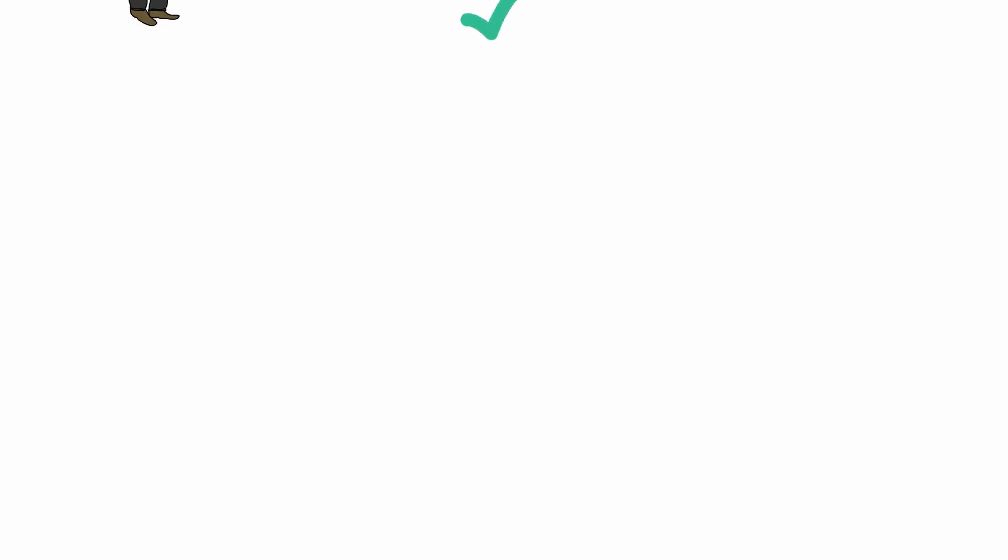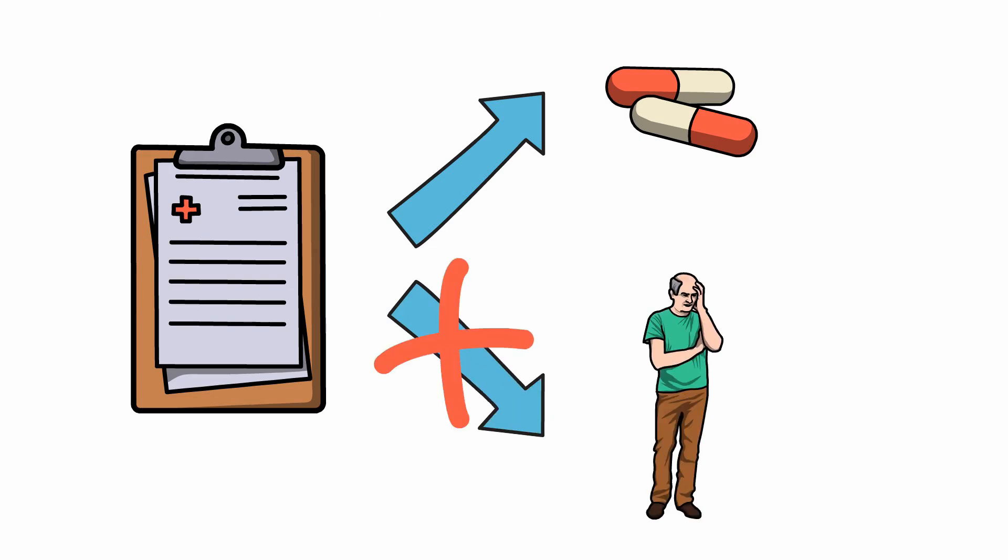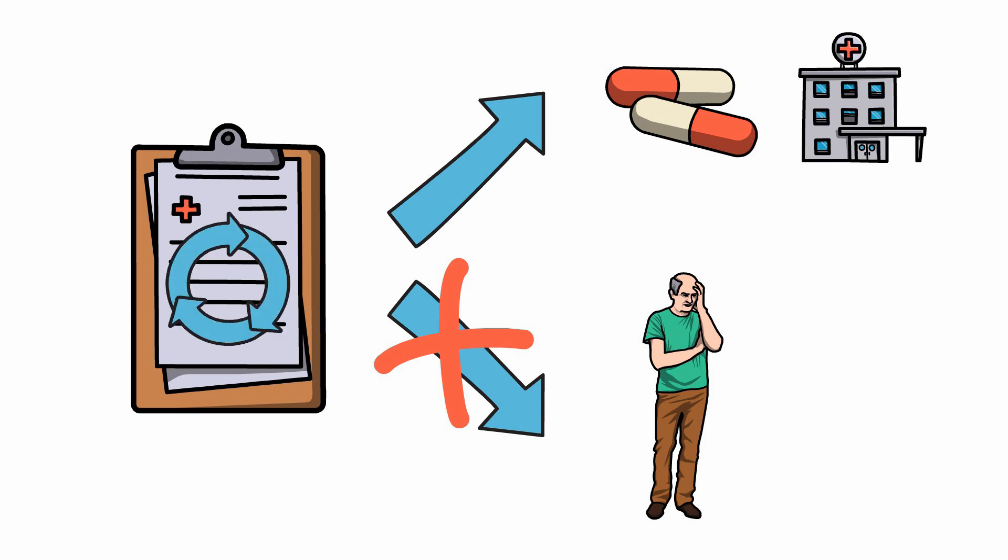Before wrapping up this video, it's important to point out that capacity applies to a specific decision, not to a specific patient. Someone may have the capacity to make one decision, such as disagreeing with taking an antibiotic, while lacking capacity to make another, such as wanting to leave the hospital, at the exact same moment. For this reason, capacity should be evaluated on an ongoing basis with each new major decision, rather than being applied as a blanket label to the patient.